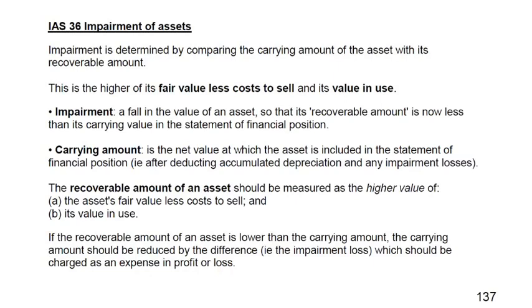Whenever there is a permanent reduction in the value of non-current assets, the assets are said to be impaired. Before moving on to calculate the impairment loss, we need to discuss what impairment means and what revaluation means. Sometimes we revalue assets — whether upward or downward — and sometimes we use impairment. What is the difference between the two, and when are these two concepts supposed to be used?